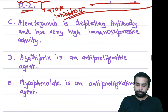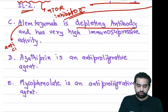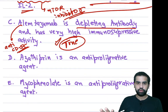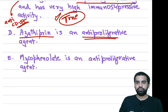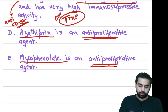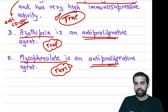Option C: Alemtuzumab is a depleting antibody — this is a true statement. Alemtuzumab is anti-CD52 and is a depleting antibody with very high immunosuppressive activity. Options D and E: azathioprine is an anti-proliferative agent and mycophenolate is an anti-proliferative agent — both are true statements. Both azathioprine and mycophenolate are anti-proliferative agents.